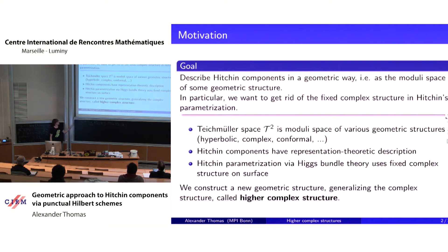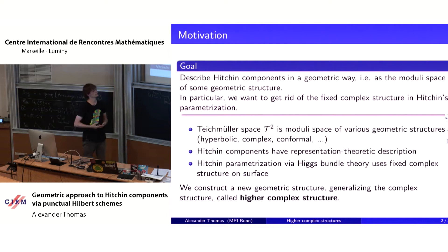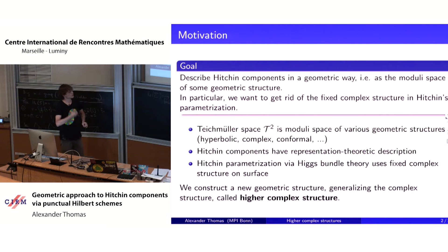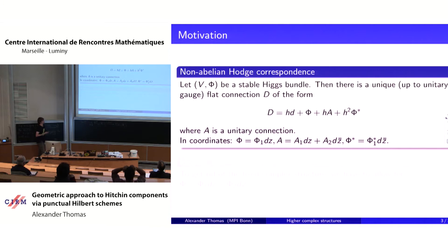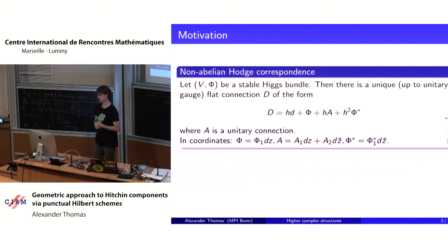As indicated in the title, to define this higher complex structure we will use what is called the punctual Hilbert scheme, an algebraic tool. I will give two slides — maybe a little bit technical — just to answer the question: why the punctual Hilbert scheme? Where does it come from? Actually, it comes from the initial approach of Hitchin: the main ingredient in the Higgs bundle approach is the non-Abelian Hodge correspondence.